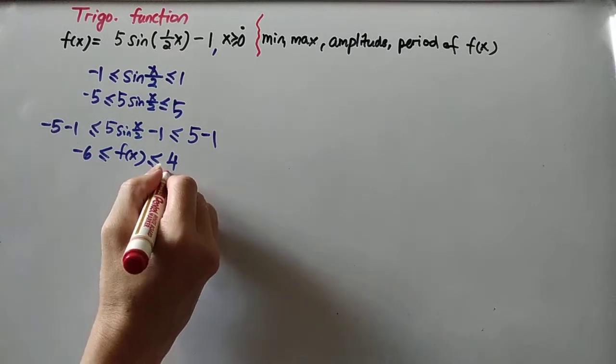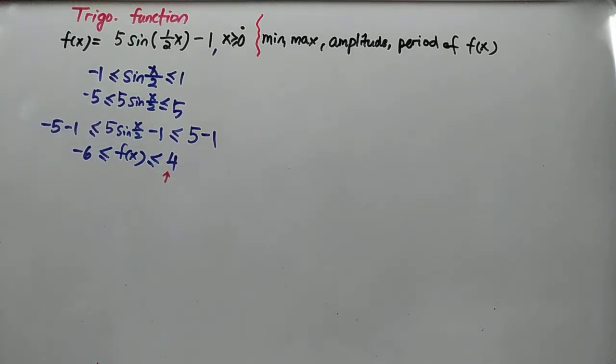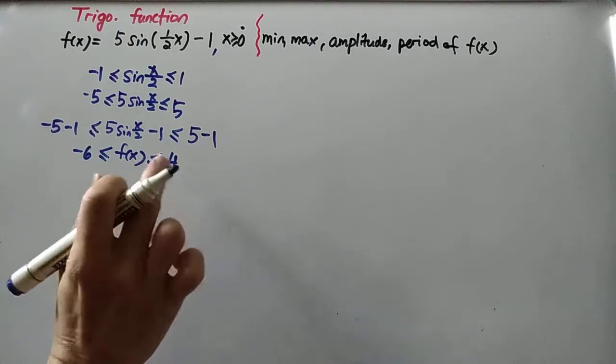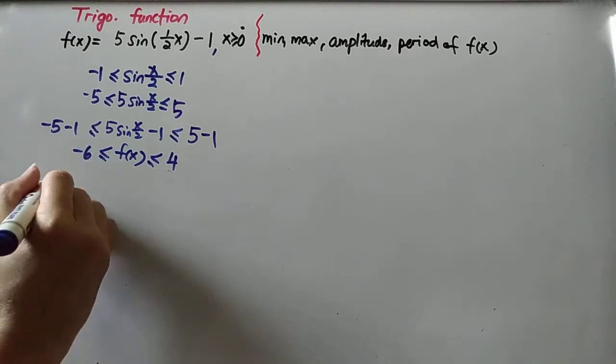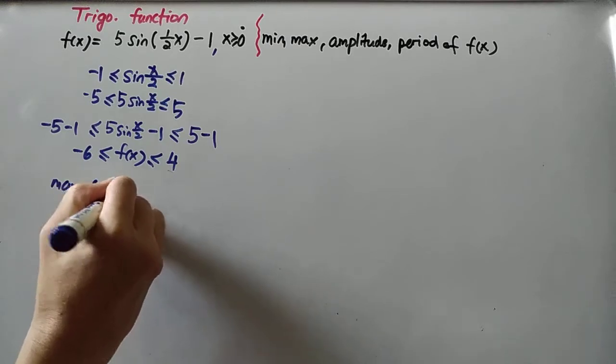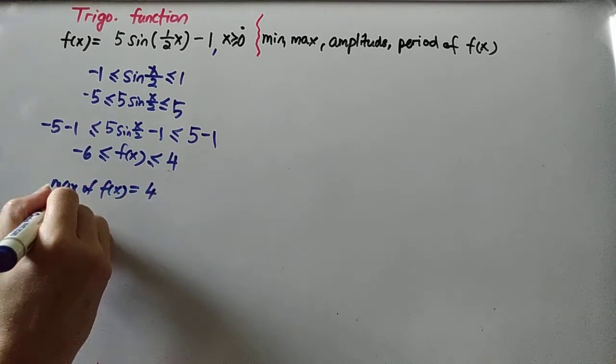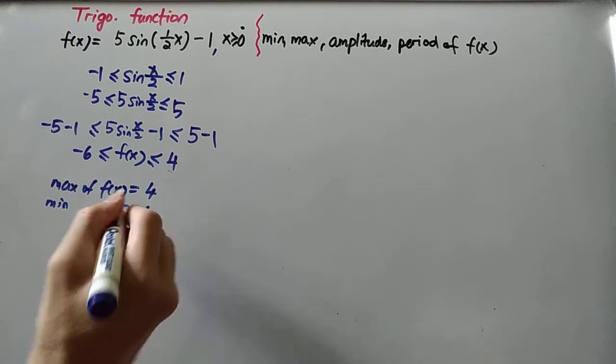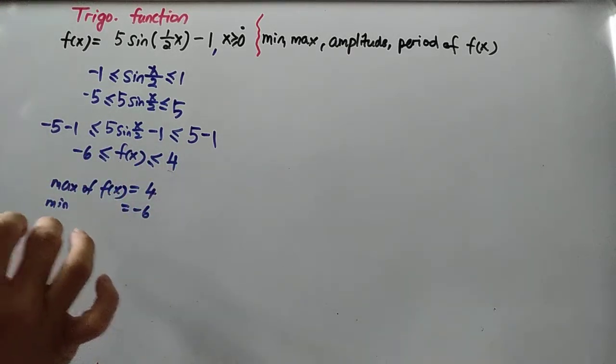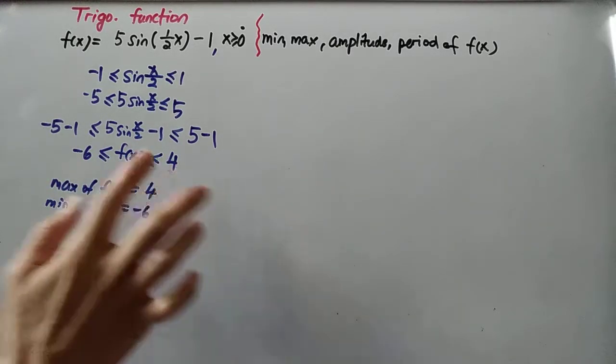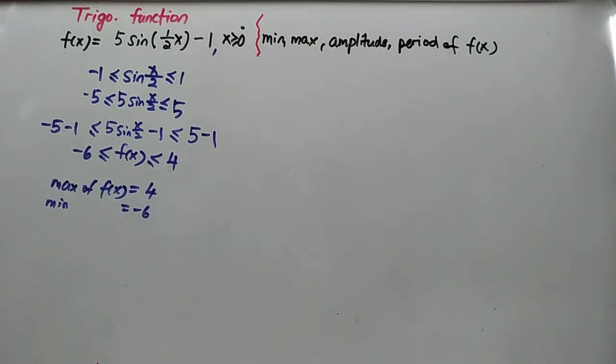So in other words, this is the maximum. From here we can know the maximum is 4 and the minimum is negative 6. Maximum of f(x) is 4, minimum is negative 6, because it's less than or equal to 4 and greater than or equal to negative 6.